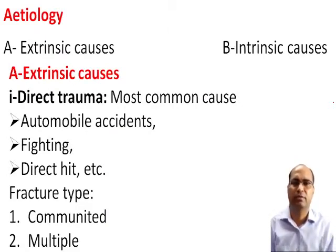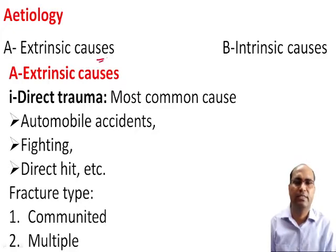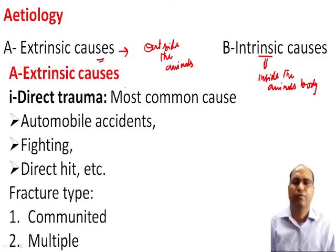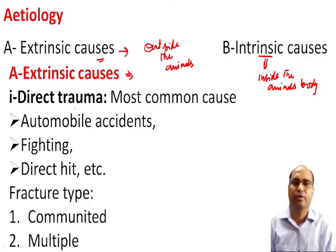Now we discuss the etiology. Fractures are caused by two types of causes: extrinsic causes and intrinsic causes. Extrinsic causes are present outside the animal's body, while intrinsic causes are present inside the animal's body. Extrinsic causes are essentially environmental causes. Under extrinsic causes there are two types: direct trauma and indirect trauma.